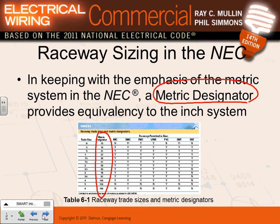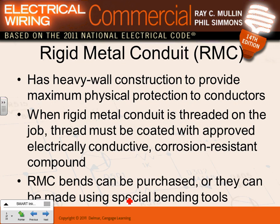Moving into rigid metal conduit - this is the worst conduit you're going to encounter. It's the hardest to work with, the hardest to bend, and it's threaded. Why would you use rigid metal conduit? Unless you have a need for severe physical protection for your conductors, or you're in a hazardous classified location - class one or class two - you would not use rigid metal conduit.